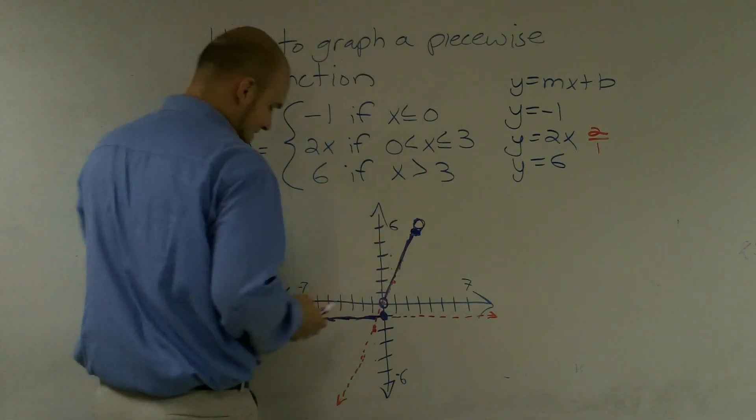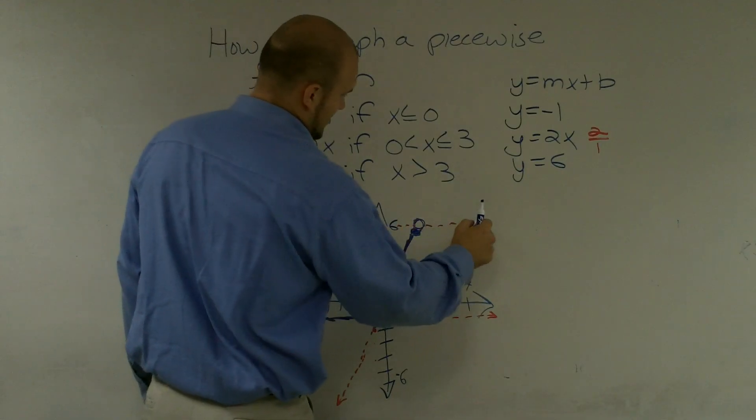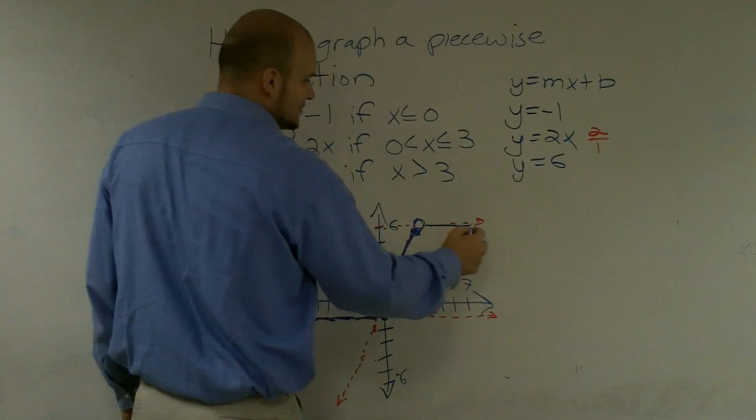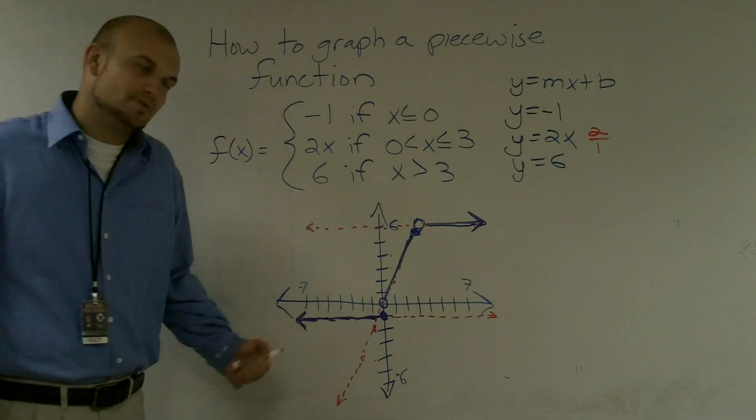And x greater than 3, this line would look like this. However, I'm only concerned about when it's greater than or equal to 3. So it's roughly going to be right there.